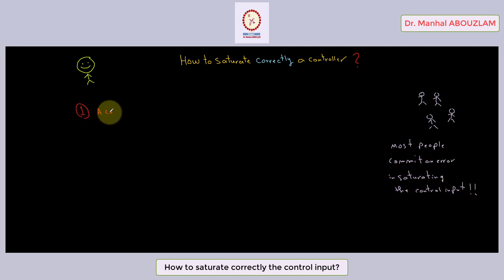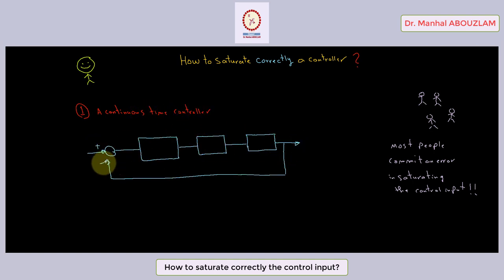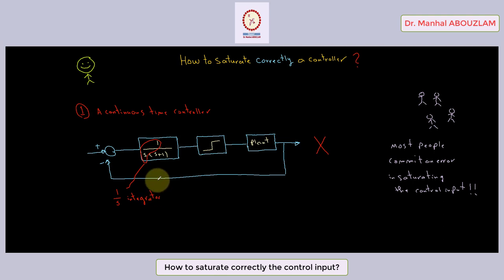Let's take the case where we have a continuous-time controller. Suppose we have this closed loop with our system and this controller, and we put here our saturation block. In fact, this closed loop is not correct, because if you observe, we have here an integrator. We don't have to put our saturation block after the controller in which there is an integrator.